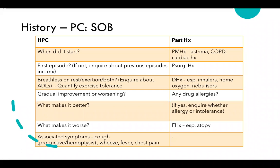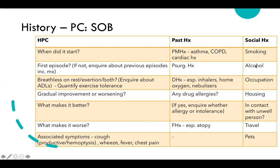In the drug history, focus on inhalers, home oxygen, and nebulizers. For drug allergies, distinguish between a true allergy — such as itching or anaphylaxis — and intolerance, where the patient just gets a bad stomach. Also ask about family history, especially atopy. In the social history, ask about smoking — what they smoke and how much — and alcohol consumption.